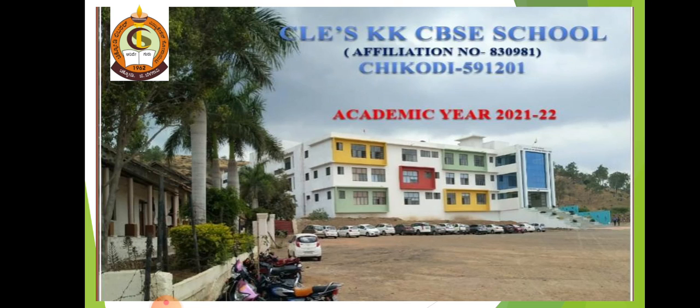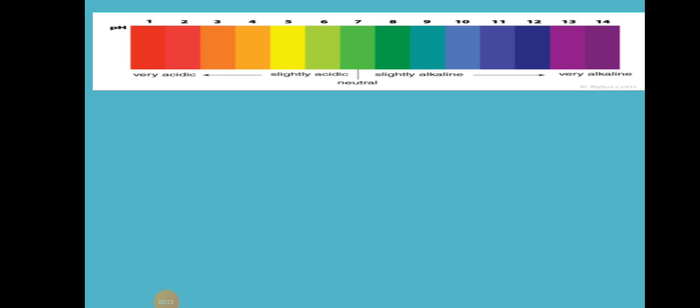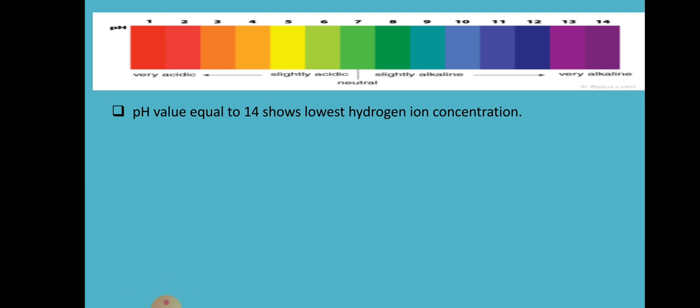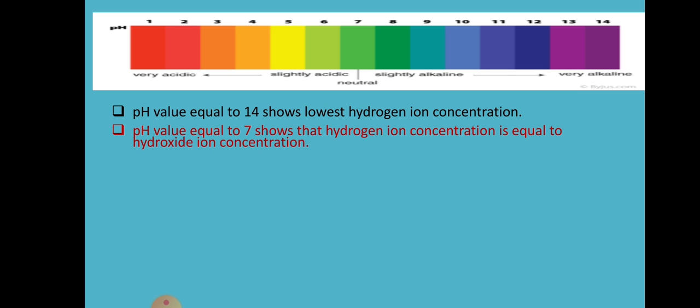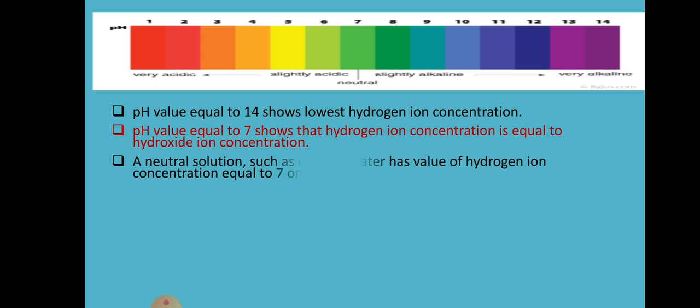Before going to learn the new concept, let us recall what we have learned yesterday. This is the pH scale where the pH value equal to 14 has the lowest hydrogen ion concentration. If the pH value is equal to 7, then it shows the hydrogen ion concentration is equal to the hydroxide ion concentration, which means it is called a neutral point. A neutral solution like distilled water has a pH value of 7.